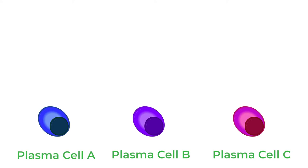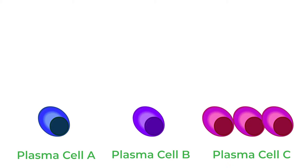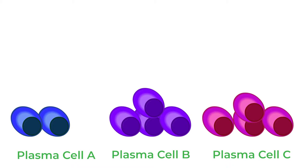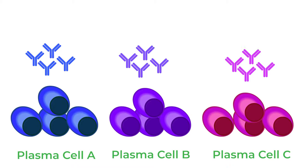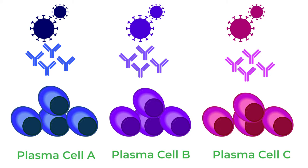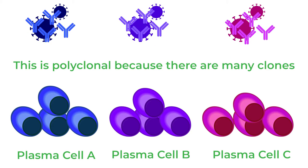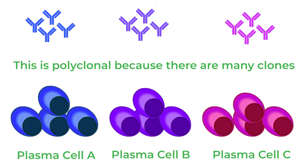In a healthy person, the body usually makes many clones of many different plasma cells, which each make their own antibodies. These antibodies fight off many different diseases, and this is polyclonal because there are many clones of many distinct plasma cells.